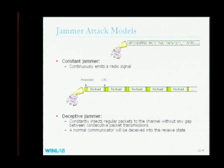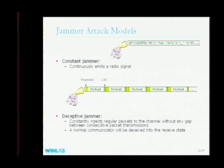The second is the deceptive jammer — a malicious jammer that acts like a legitimate device. It keeps sending regular packets with proper preamble and CRC, but doesn't stop between packets. In wireless communication, receiving has higher priority than transmission, so even if you have something to transmit, if this jammer is present, you are stuck in receiving mode and cannot send anything.